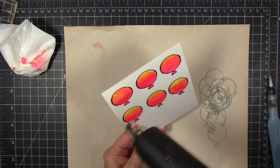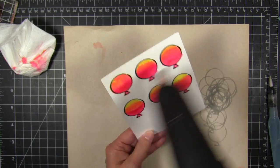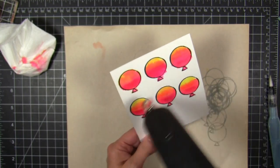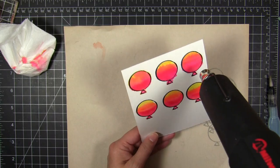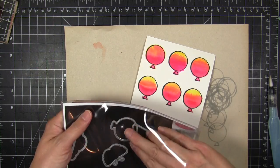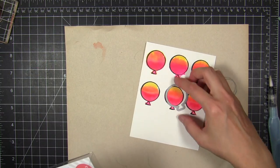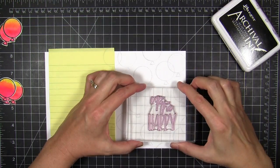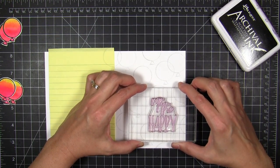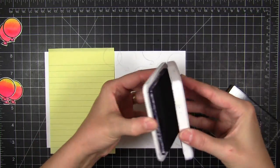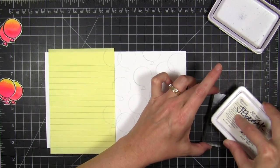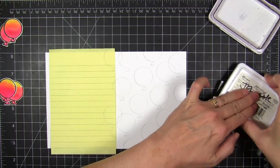Once I've got them all colored, and I wasn't careful about staying inside the lines because I'm going to die cut them out, I'm using my heat tool to speed heat set everything so I can keep moving on my card. And I do flick it back and forth like that. I don't know why I do that. I guess I think it's going to dry everything faster, but it doesn't. And I went ahead and used the matching Up the Happy dies to die cut all those balloons out. Whatever I don't use, I'll just set aside for a future project.